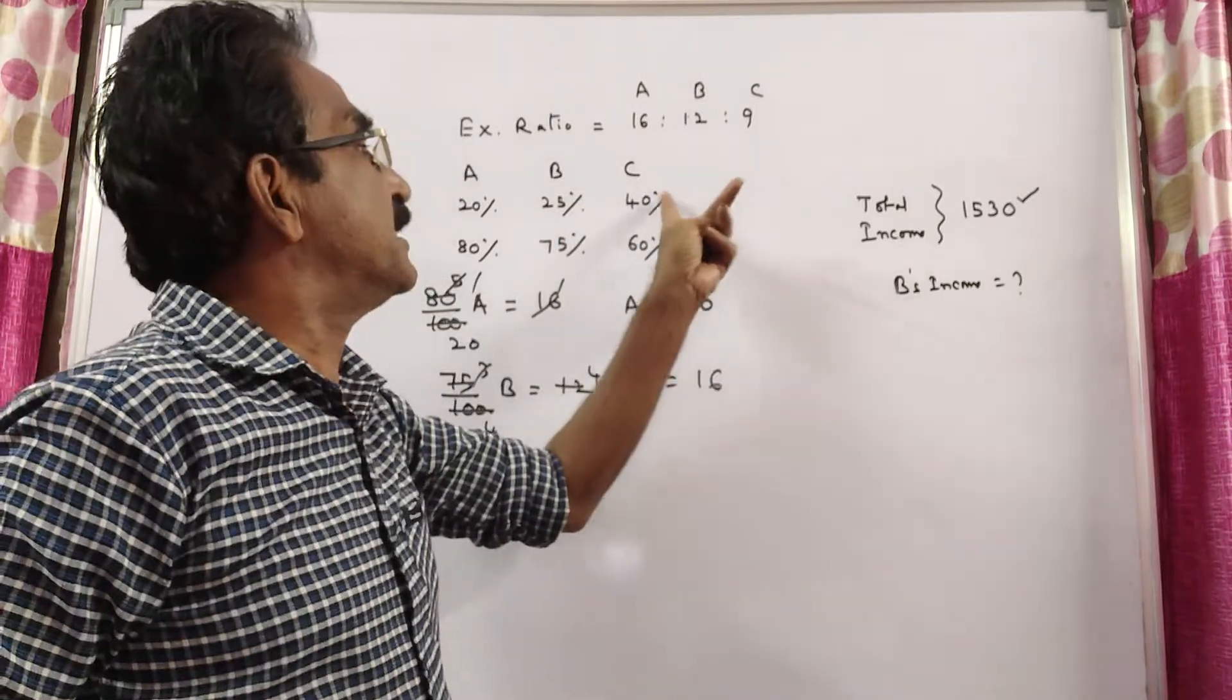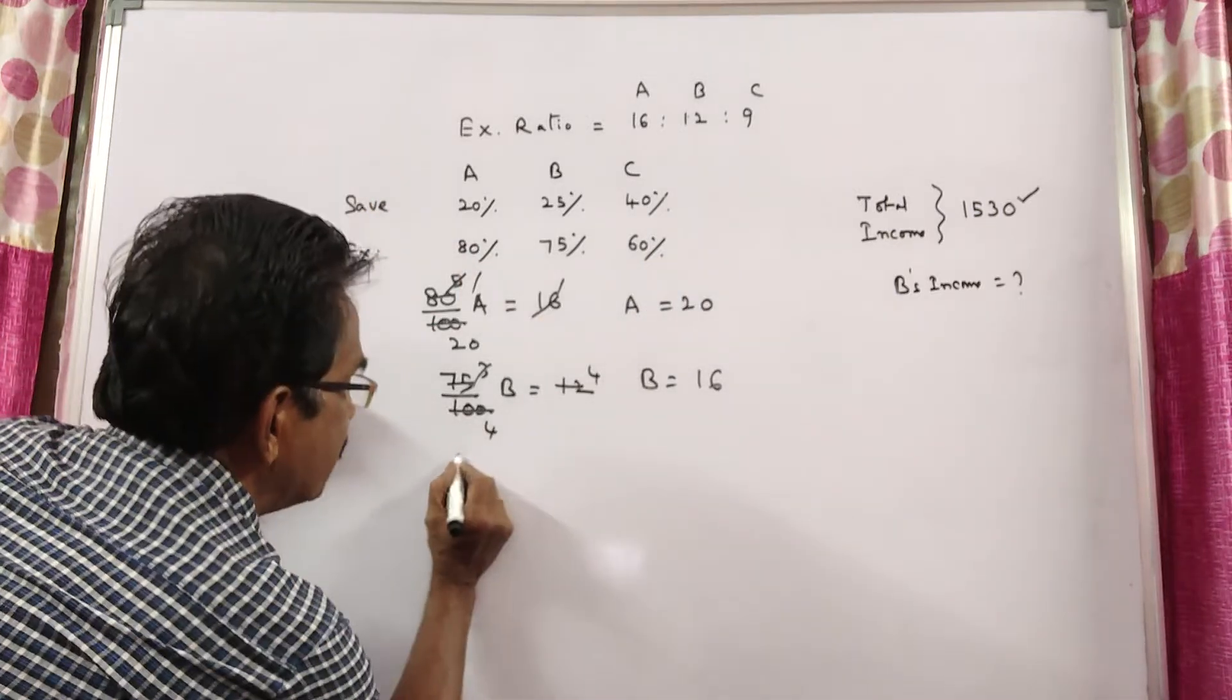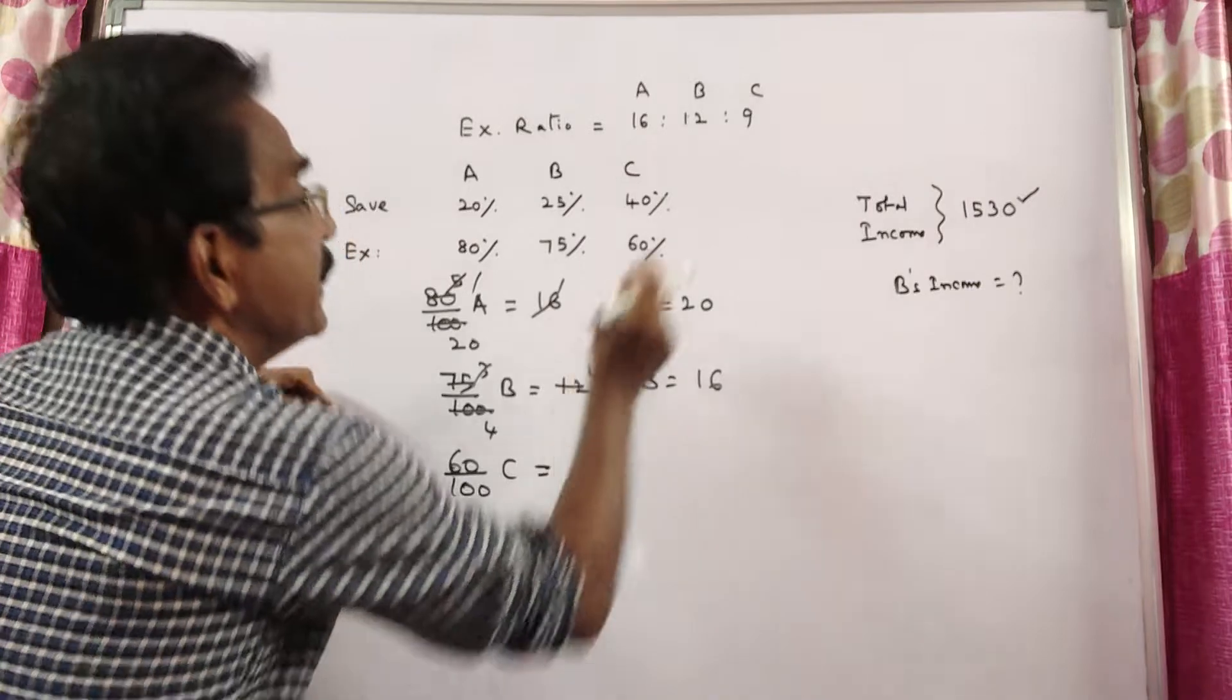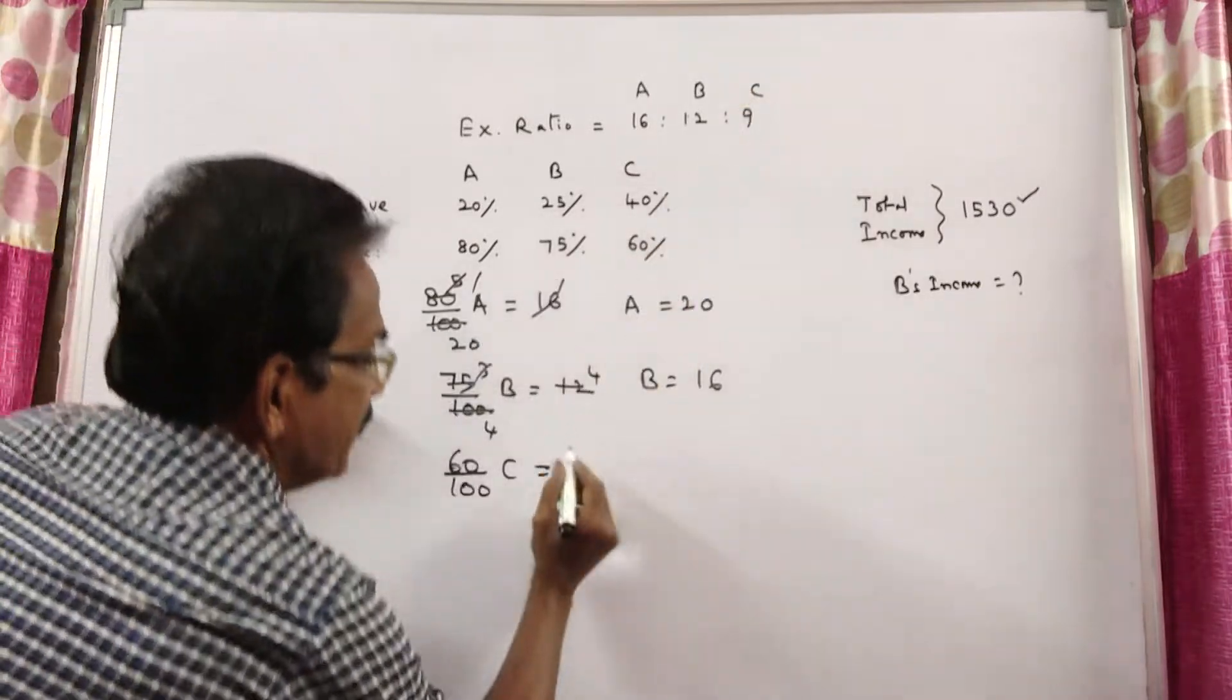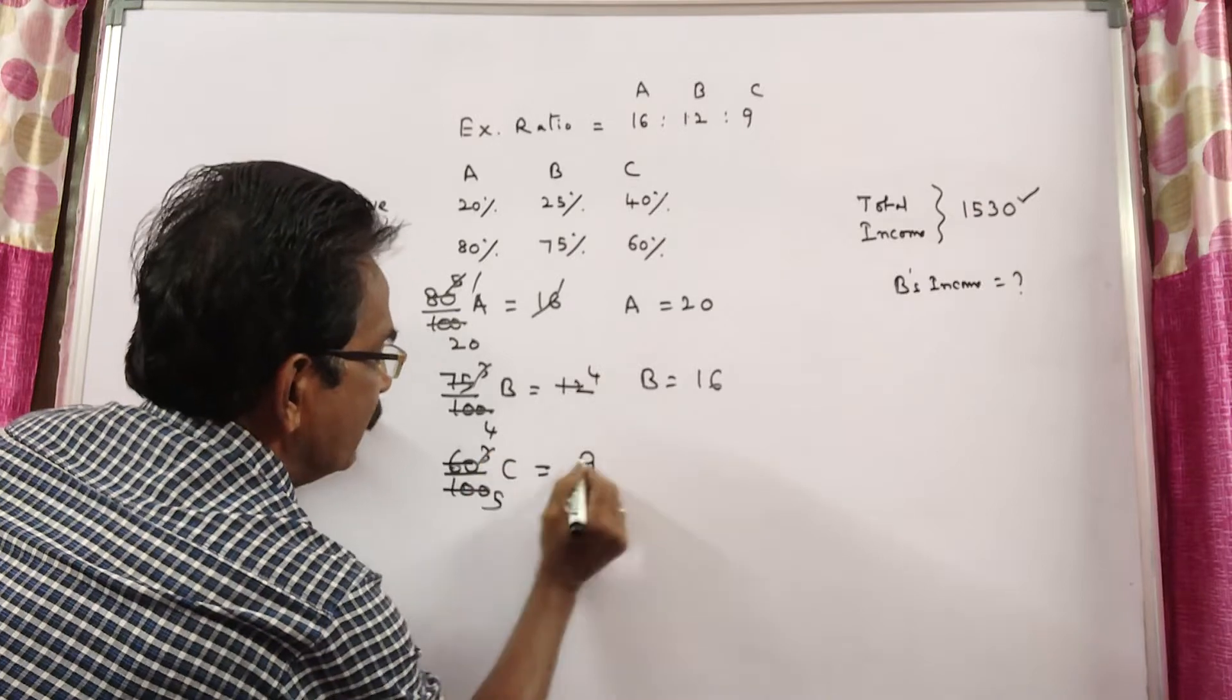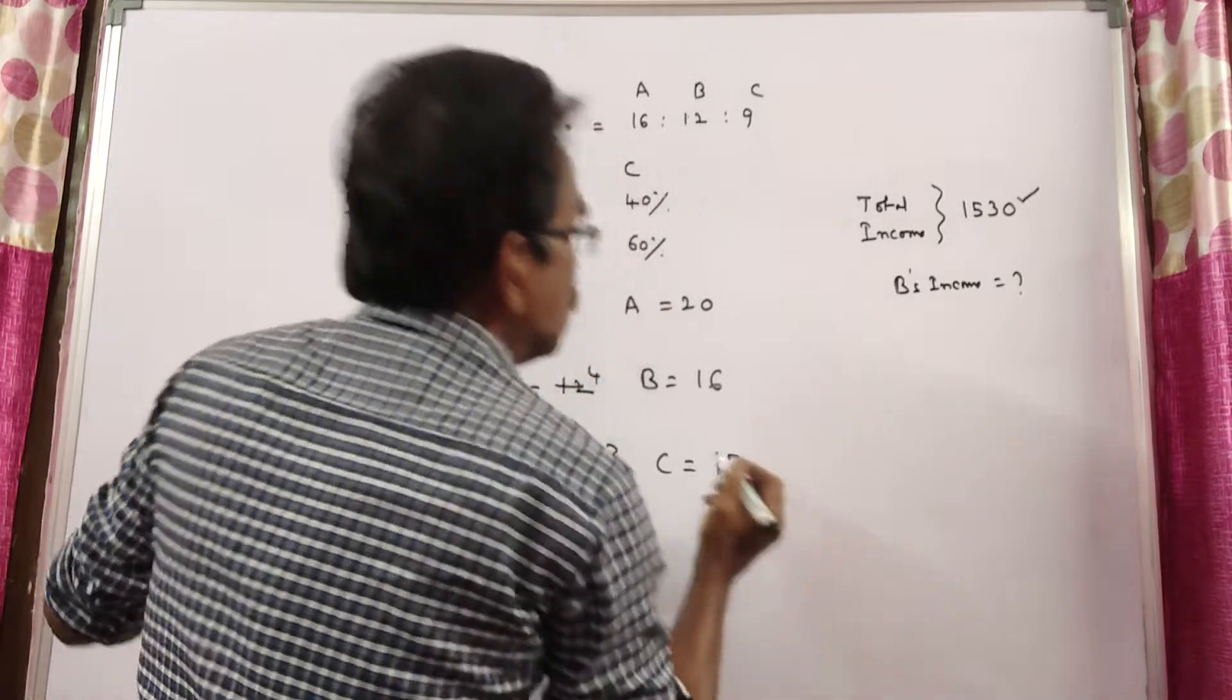C saves 40% of his income, which means C spends 60% of his income. 60% of C's income is his spending, which is 9. Therefore, C equals 15.